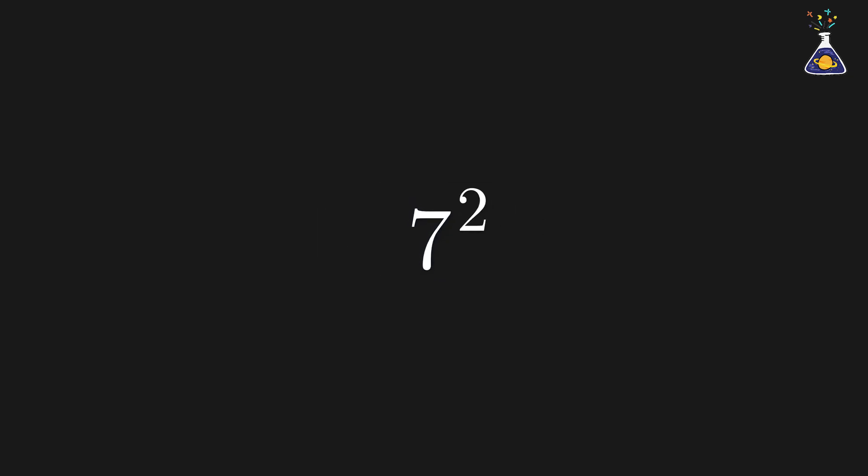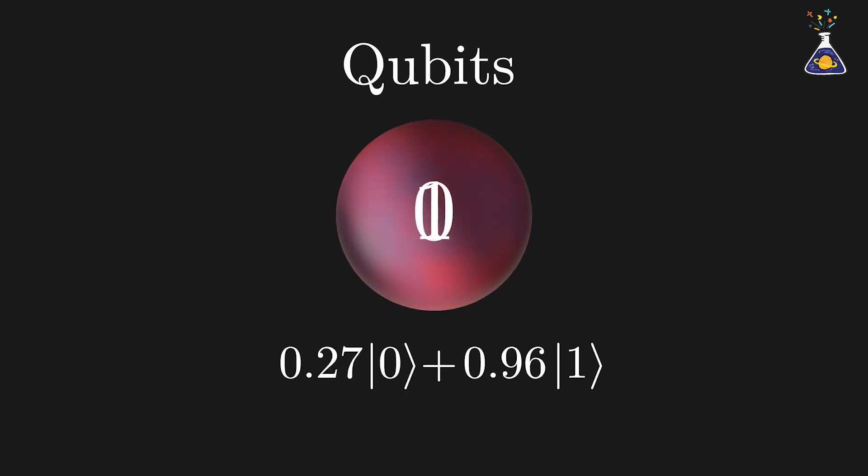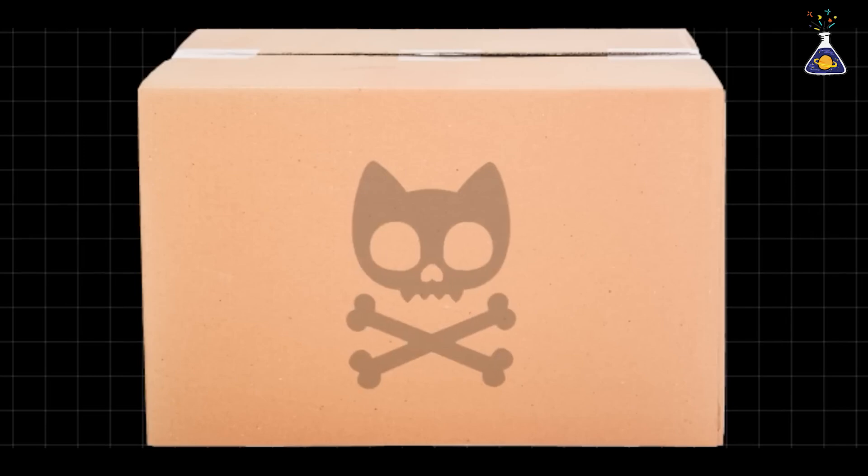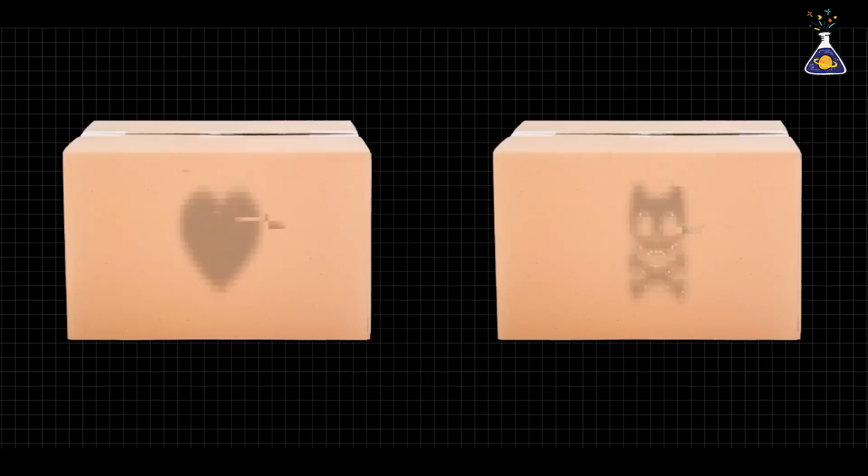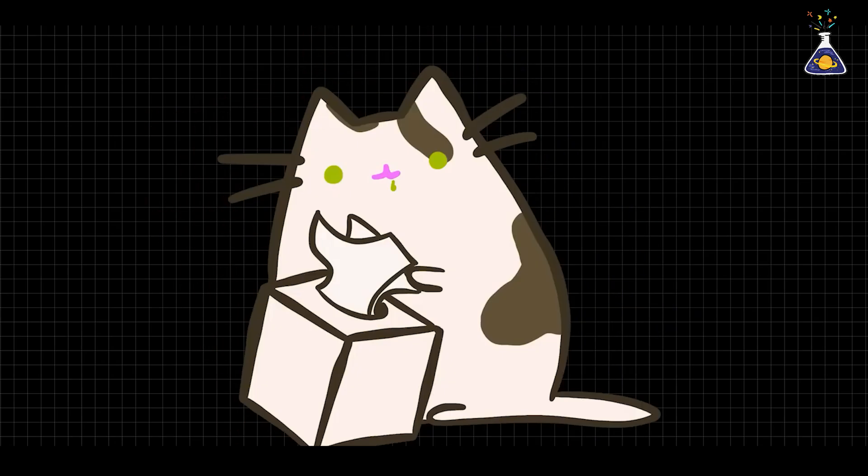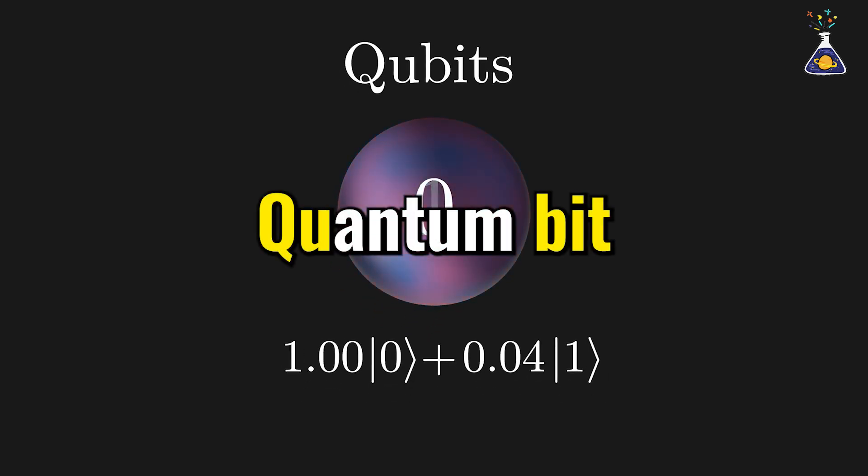But quantum computers use a peculiar unit called the qubit instead of bits. A single qubit isn't limited to just 0 or 1. It can exist in a superposition. Doesn't that sound familiar? Think of a cat inside a box with a 50% chance of being exposed to poisonous gas. Until the box is opened, the cat exists in a state of superposition, simultaneously alive and dead. But the moment the box is opened, the cat settles into one definite state. Schrödinger's cat. Similarly, a qubit simultaneously holds both states, 0 and 1. Hence the name quantum bit, or simply qubit.